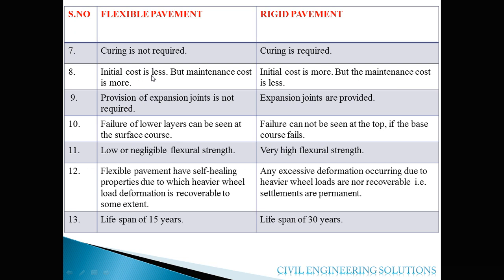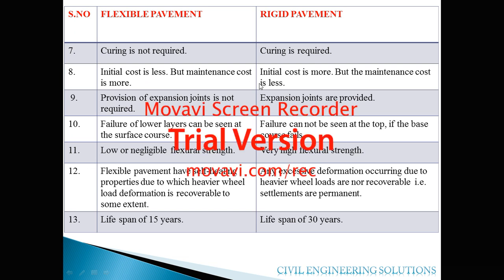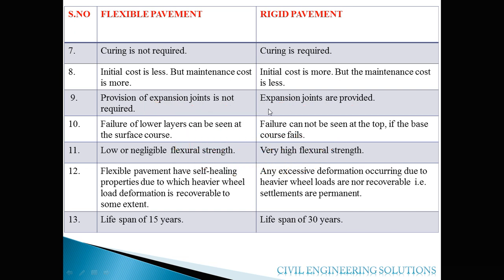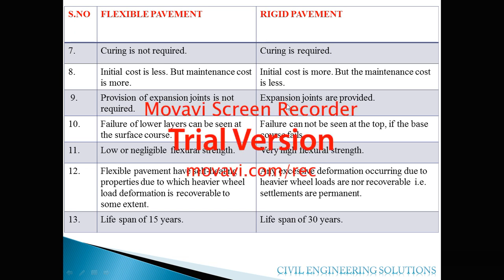The initial cost of flexible pavement is less, but the maintenance cost is more. This is the reverse for rigid pavement — the initial cost is more, but the maintenance cost is less. In flexible pavement, provision of expansion joints is not required. However, in rigid pavement, expansion joints are very important because there are chances of stresses due to temperature variation, so expansion joints must be provided to accommodate thermal expansion.